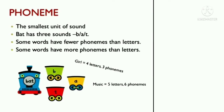Before moving to phonology and morphology, let's clear our basics on phonemes and morphemes. A phoneme is the smallest unit of sound. For example, the word 'bat' breaks into sounds: b, a, t. These individual sounds are known as phonemes.